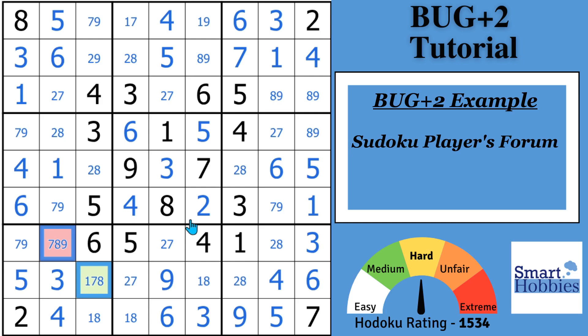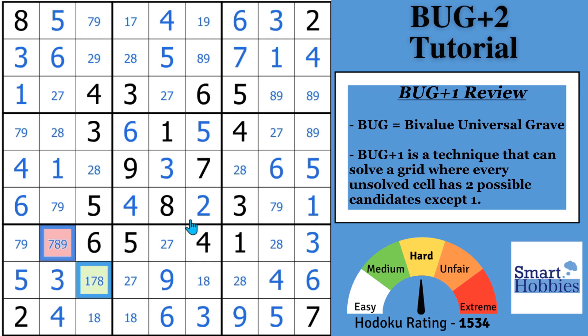In order to fully understand what BUG Plus 2 is, I do need to review BUG Plus 1 with you. So BUG stands for Bi-value Universal Grave. It's a way to solve a whole bunch of bi-value cells. So BUG Plus 1 is a technique where you solve a grid where every unsolved cell has two possible candidates except for one.